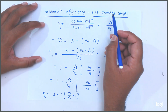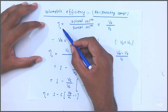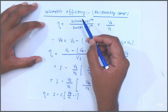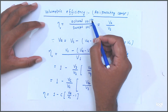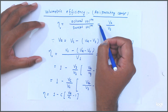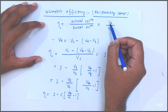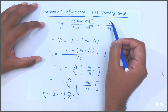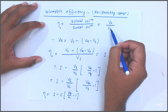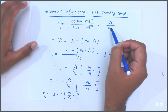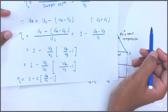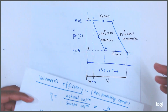So what is volumetric efficiency? Volumetric efficiency is equal to actual volume upon swept volume. Actual volume is denoted by Va and swept volume is denoted by Vs. So let's understand the values of Va and Vs.